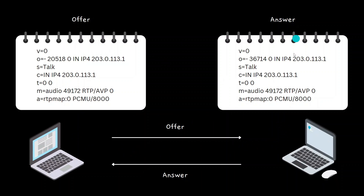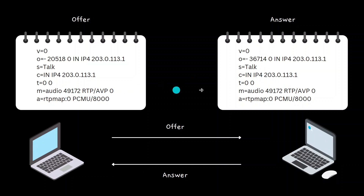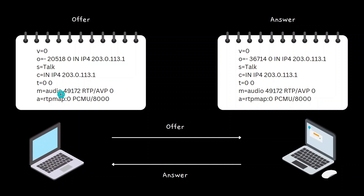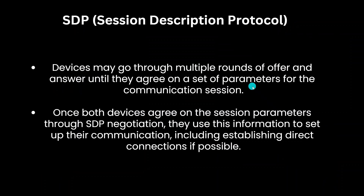Let's visualize this. We have two devices connecting with each other — one sends an offer and the other sends an answer. Both contain similar information as described. You can see these two devices agree to connect over PCMU, a specific protocol, at 8000 frequency, and the data they exchange is audio. This is how the two computers agree on the port, address, and manner of communication — that's how SDP serves its purpose in an application.